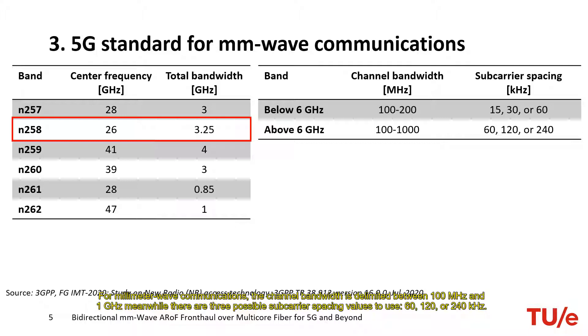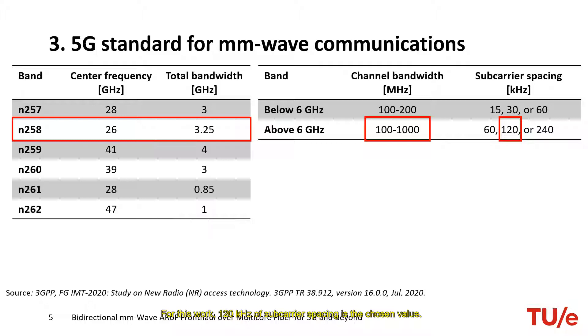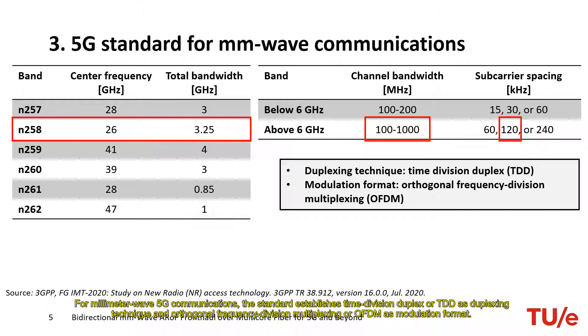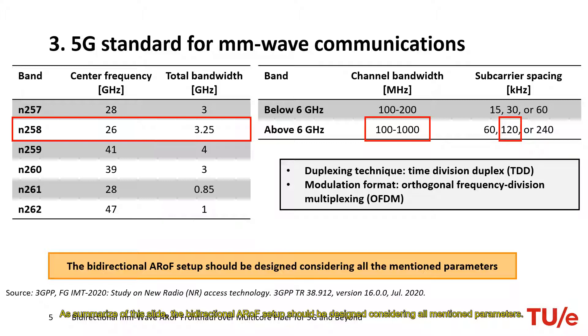Other considerations to take into account are the duplexing technique and the employed modulation format. For millimeter wave 5G communication, the standard establishes time division duplex or TDD as duplexing technique and orthogonal frequency division multiplexing or OFDM as modulation format. As a summary of this slide, the bidirectional RoF setup should be designed considering all mentioned parameters.